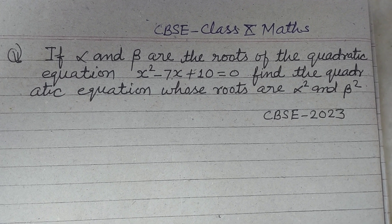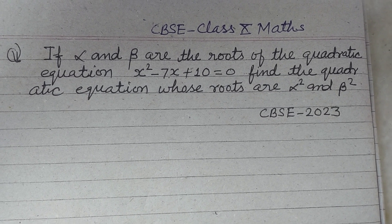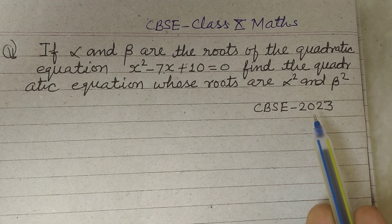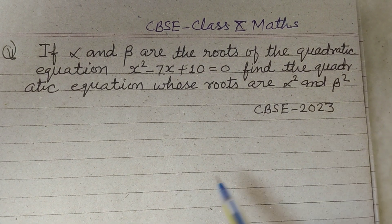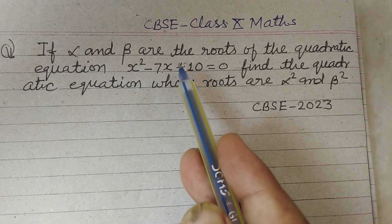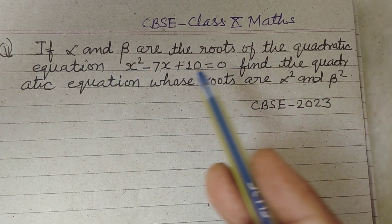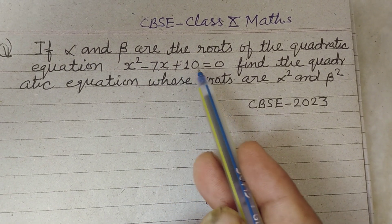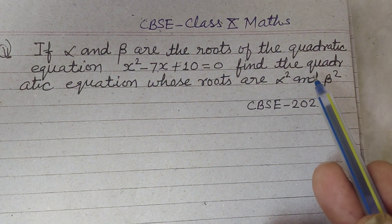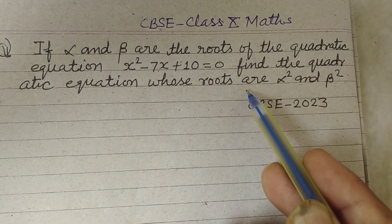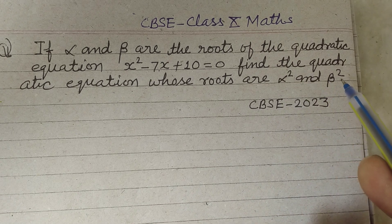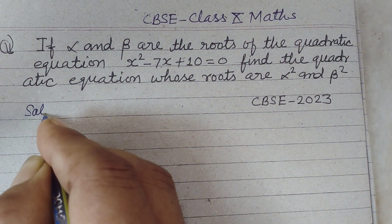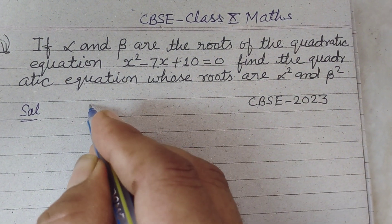Hello students, warm welcome to this YouTube channel. This question is from CVSC Class 12 2023 board exam. If alpha and beta are the roots of the quadratic equation x squared minus 7x plus 10 equal to 0, find the quadratic equation whose roots are alpha squared and beta squared.